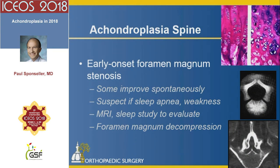The early onset foramen magnum stenosis and spinal stenosis arises because of undergrowth of the transverse growth plates. The neural central synchondrosis — shown in a specimen radiograph — have zonation just like the long growth plates in the lower extremities. Failure of this growth results in stenosis, especially in the lower lumbar spine, compounded by infolding of the ligamentum flavum. Any disc issue tips them over the edge because they have no reserve in their spinal canal.